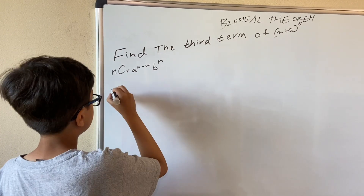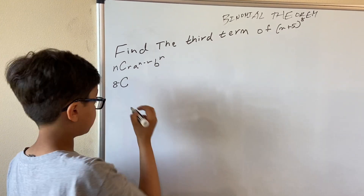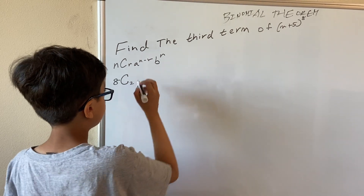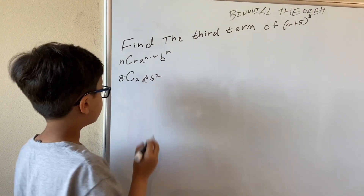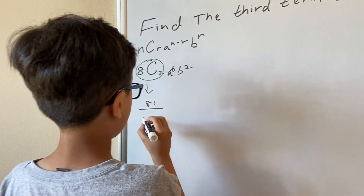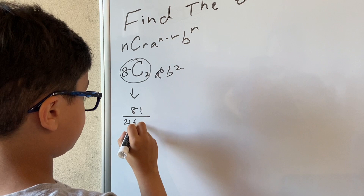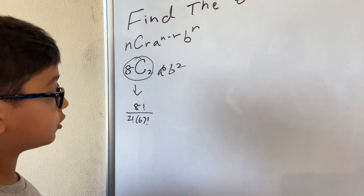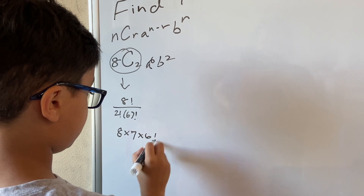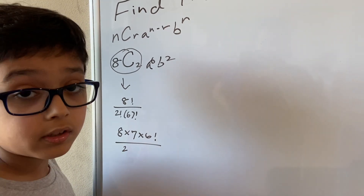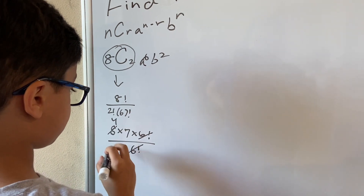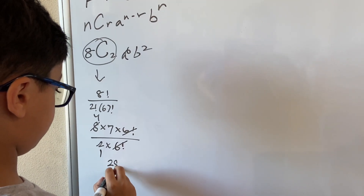We see n is 8. For the third term, r equals 3 minus 1 = 2. So we need 8C2 · x^(8-2) · 5^2, which is 8C2 · x^6 · 5^2. To find 8C2: 8 factorial divided by 2 factorial times 6 factorial. We can write this as 8 × 7 × 6 factorial over 2 × 6 factorial. Cancel the 6 factorials, simplify, and you get 28.